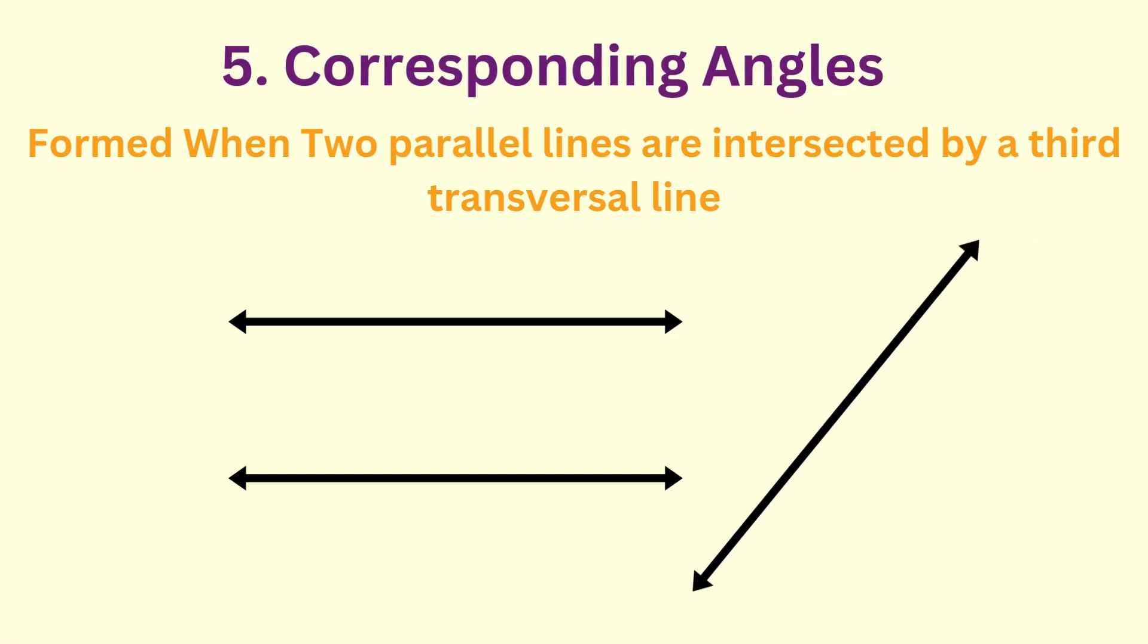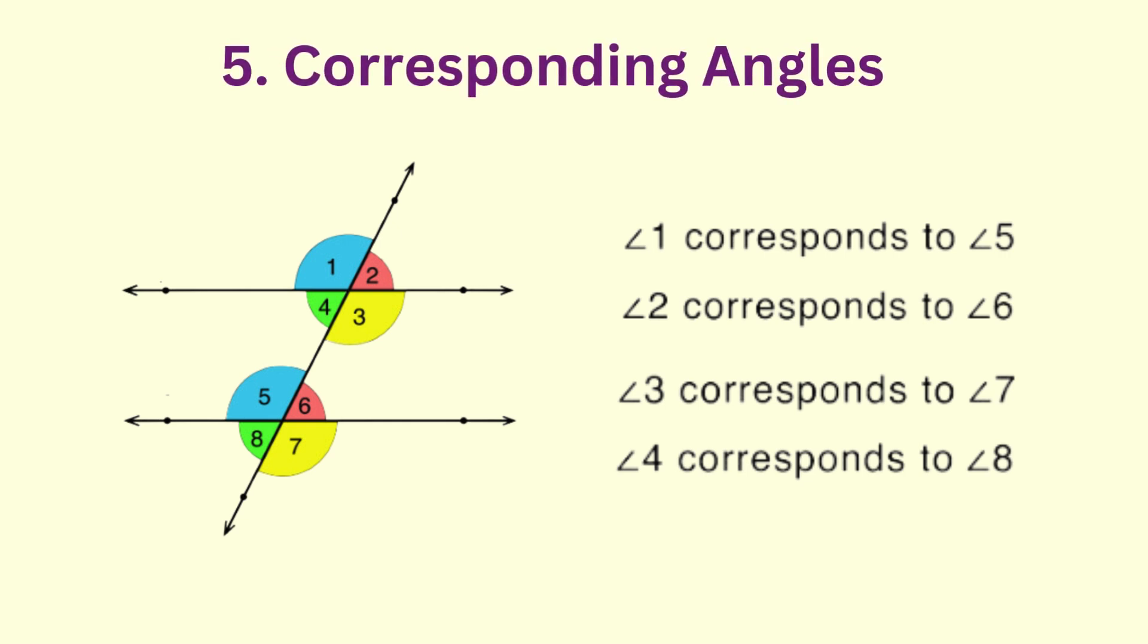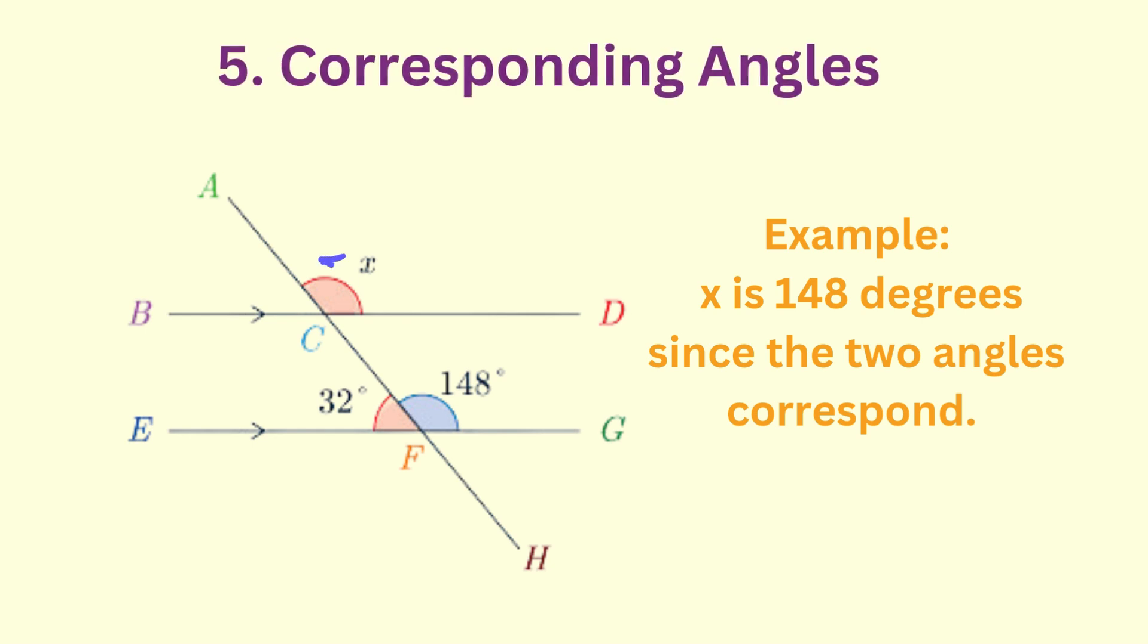The corresponding angles definition tells us that when two parallel lines are intersected by a third transversal line, the angles that occupy the same relative position at each intersection are known to be corresponding angles to each other.